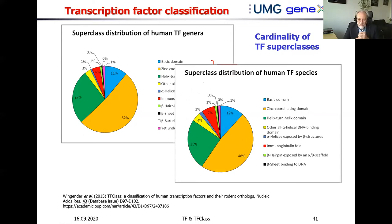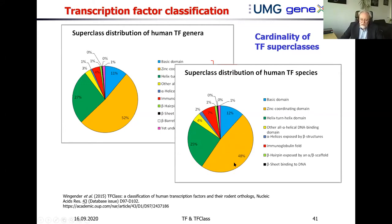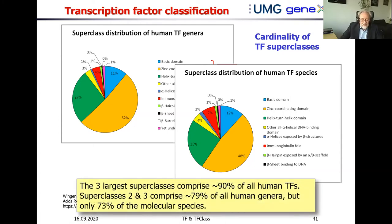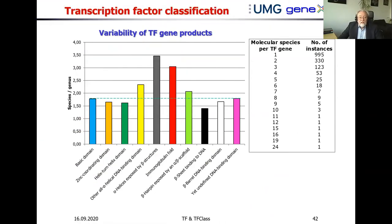Looking at the distribution of human molecular species (proteins rather than genes), we see a similar pattern, but zinc finger proteins are less than half. This is simply because zinc finger proteins have much less splicing variance than others — helix-turn-helix factors and particularly immunoglobulin fold and alpha-helix/beta-structure factors have far more splice variants than zinc finger superclass members.